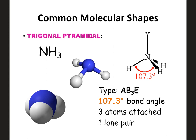Trigonal pyramidal is formed by adding a lone pair to the center. You still have three attached, but now one lone pair on the center atom. Instead of being flat, the lone pair causes the bonding electrons to bend down to get away from it. This gives a bond angle of about 107 degrees. Three atoms attached to the center, one lone pair on the center — that's trigonal pyramidal, with roughly a 107-degree bond angle.